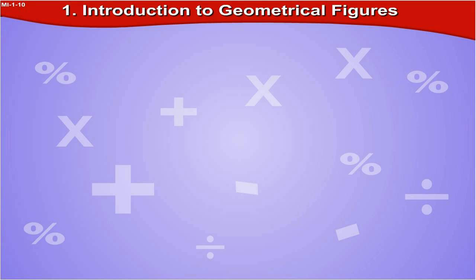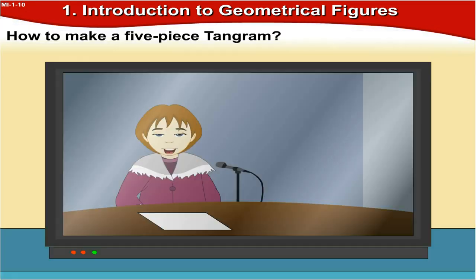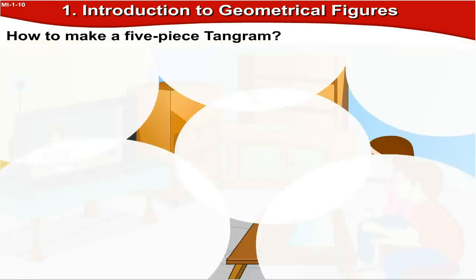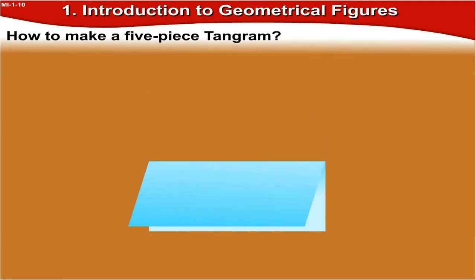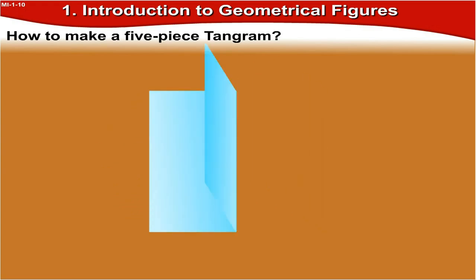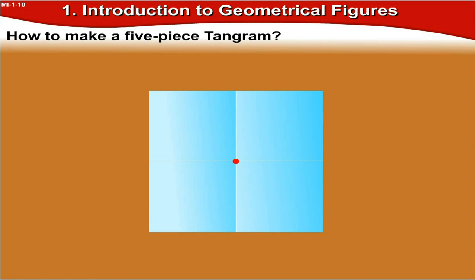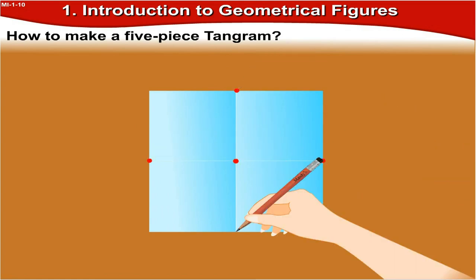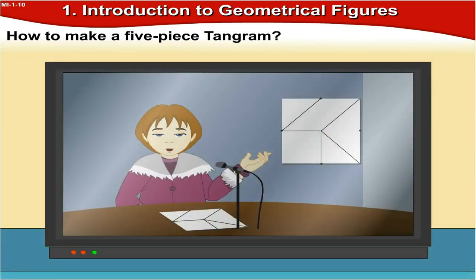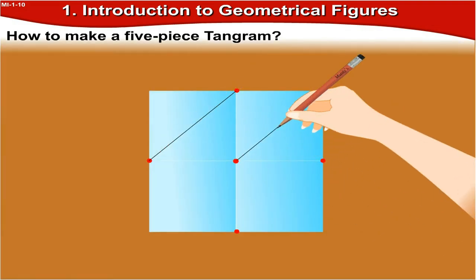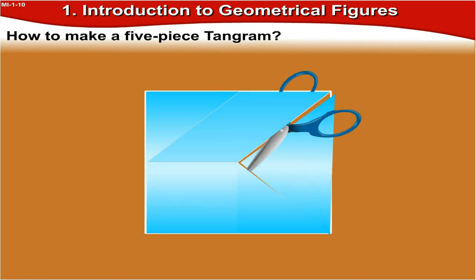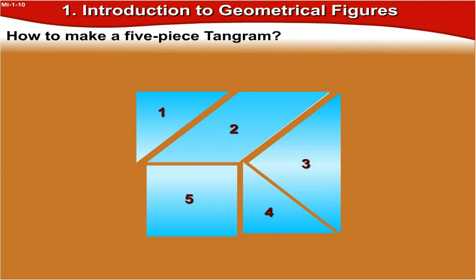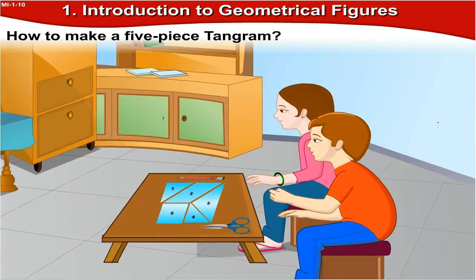Now let's have some fun. Let us learn how to make a five-piece tangram. Take a square piece of paper. Find the center of the paper by folding it twice. Mark the center of all four edges. Draw lines to connect the center of the sides and the center of the square as shown in the picture. Now make five pieces of the square by cutting along the lines as shown, but be very careful with the scissors.